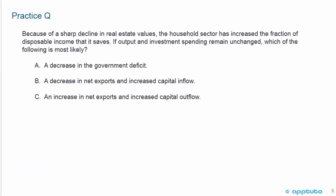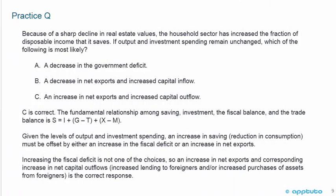Last practice question: Because of a sharp decline in real estate values, the household sector has increased the fraction of disposable income that it saves. If output and investment spending remain unchanged, which of the following is most likely? A) a decrease in the government deficit; B) a decrease in net exports and increased capital flow; or C) an increase in net exports and increased capital outflow. C is correct. The fundamental relationship is S equals I plus G minus T plus X minus M.